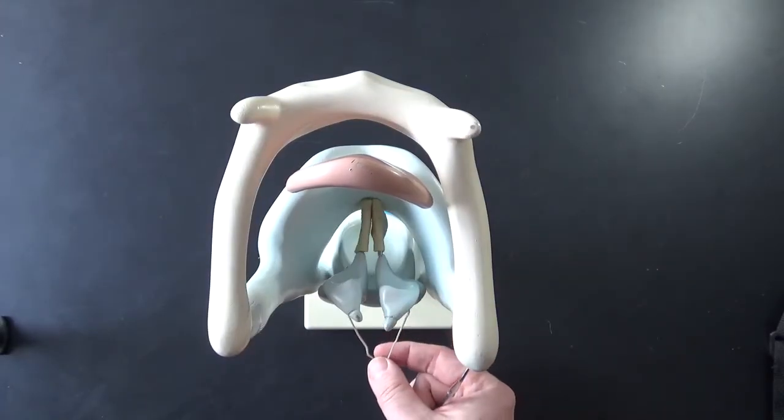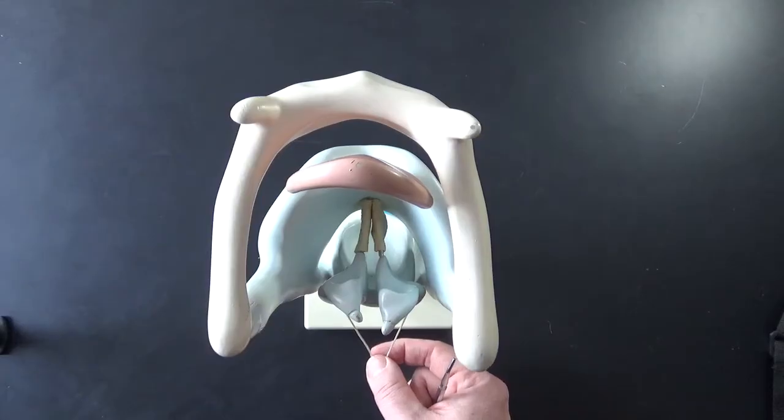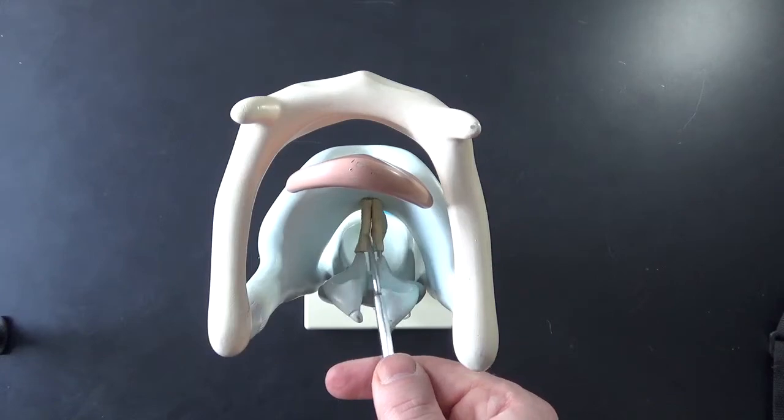If we were to pull on the string right here we would be able to move the arytenoid cartilages. We've got muscles that do that for us, and you can see how they would act to open and close the vocal folds.